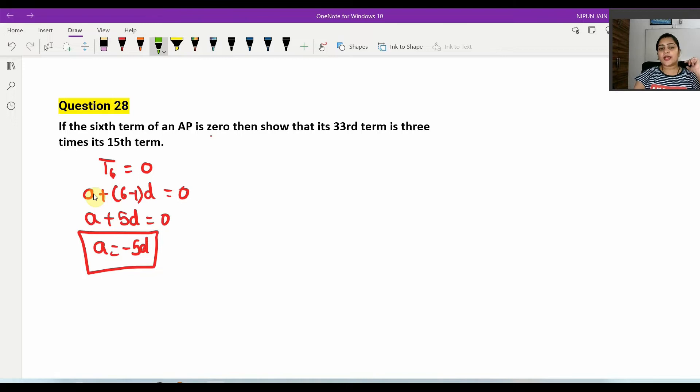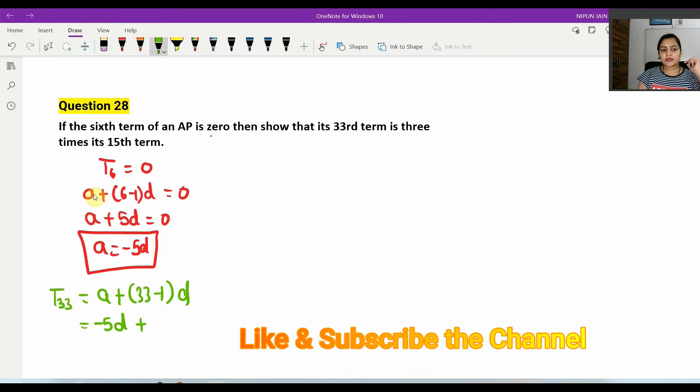Now what is given? Show that 33rd term is 3 times its 15th term. So let's calculate the 33rd term. T33 equals to A plus 33 minus 1 into D. A value is minus 5D plus 32D. Right?